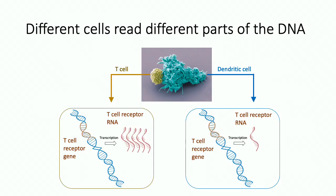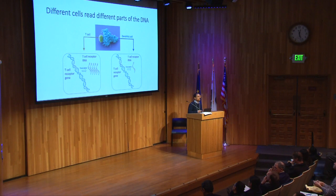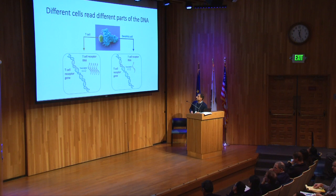Going back to the question of why cells are so different: different cells read different parts of the DNA. If we look at RNA molecules inside a T cell, we see a lot of RNA from the T cell receptor locus. But if you look inside a dendritic cell interacting with the T cell, we almost don't see any expression at that locus — because it's simply not needed for that cell.